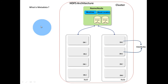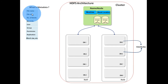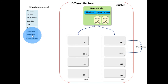First, we will see what is metadata. Metadata contains information like file name, file size, number of blocks the file is broken into, block ID, user who created the file, user group, access permission to different users, block replication, block size, etc.